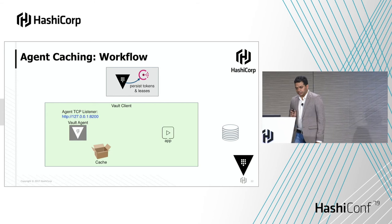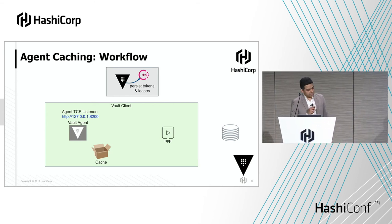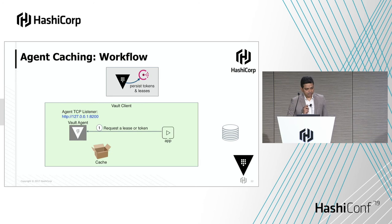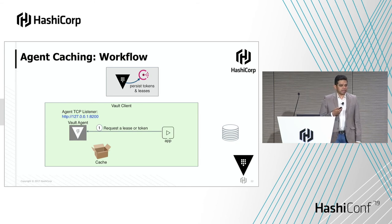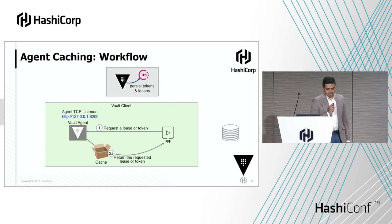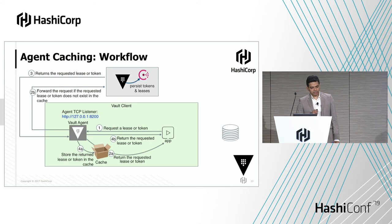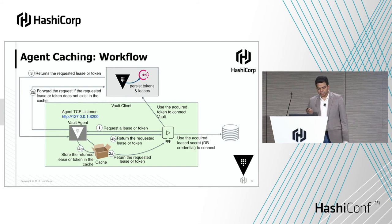Let's look at agent caching using a diagram. The gray block depicts the Vault server and the green block is the Vault Agent on the client side. The application, instead of talking directly to the Vault server, requests a lease or token from the Vault Agent. The response will be a pass-through and the cache is a no-op for non-cached items. Only for leases or tokens does the agent check the cache — if a response already exists it returns it, if not the request is forwarded to the Vault server. Vault server returns the lease or token, the agent stores it in the cache, and returns it to the application.